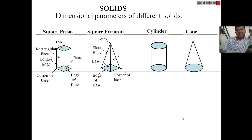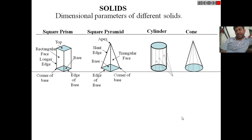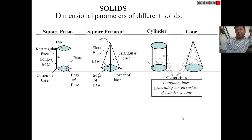In cylinders and cones, we cannot visualize slant or vertical longer edges as we do in square prisms and square pyramids. So to construct a cylinder and cone, we require some imaginary lines to generate these curved surfaces. That is why these are called generators.